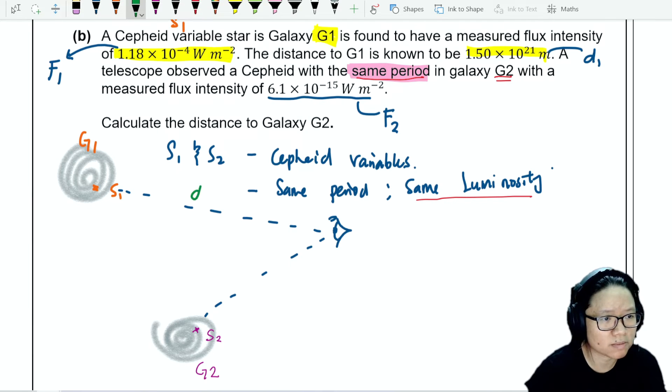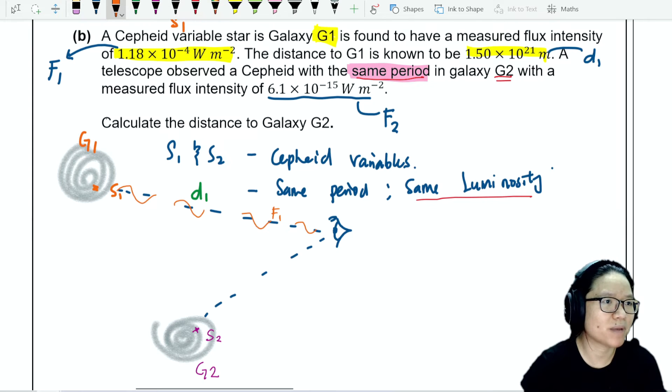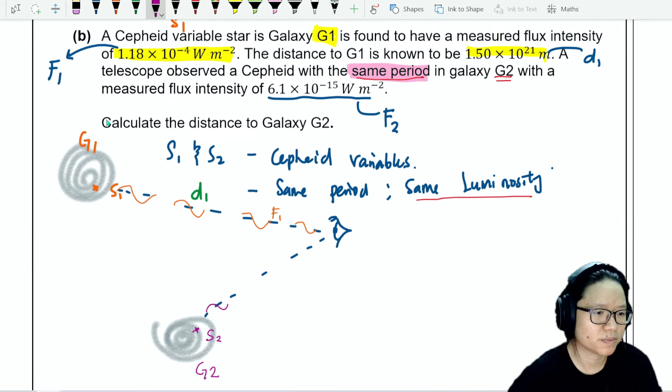If we think about this, and this one here is D1, we already know. And then the light, the electromagnetic radiation from S1 is F1, the intensity is F1. And then from S2, this one here is F2. Does that make sense?